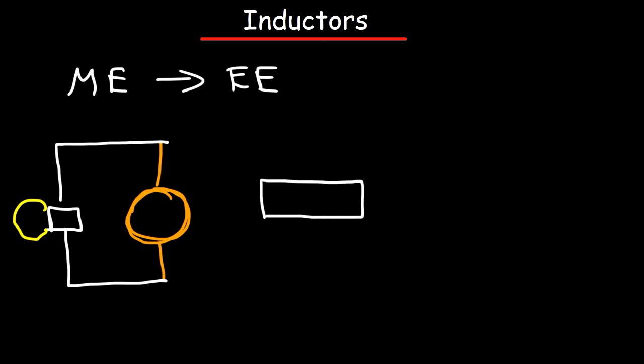Let's say this is the north pole of the magnet and this is the south pole. As you use energy from your hands and move the magnet into or out of the coil, the magnetic field inside the coil is changing. As you move into it, the magnetic field expands.